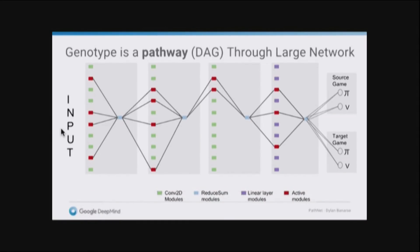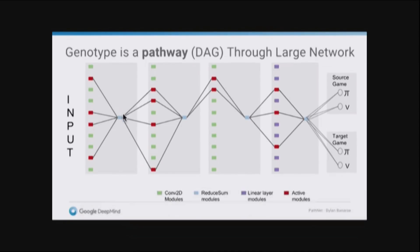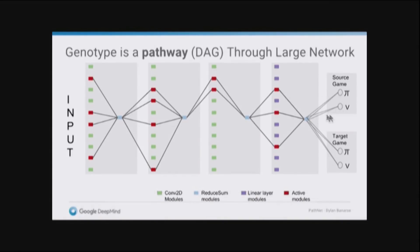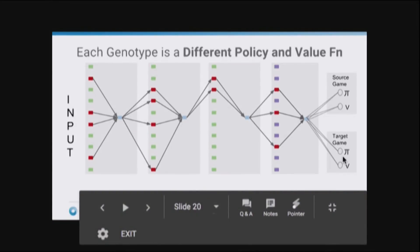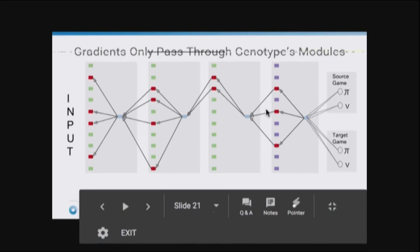We do the forward pass through these four modules, and then we combine them with a reduced sum. We just add them up. And then we pass those activations to the next four modules that are chosen in the second layer, and so forth until the end. We always train the same readout on the source game and this readout on the target game. Then we do the backwards pass. We only apply the gradient updates. We only change the weights of this subset of modules that are chosen.